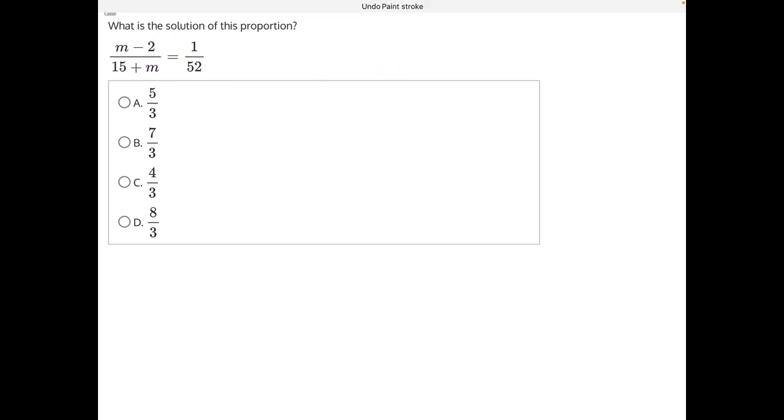So we're going to first cross multiply this denominator to this numerator, giving us 52 times m minus 2, and then set that equal to the cross multiplication of the other numerator and denominator, 1 times 15 plus m.